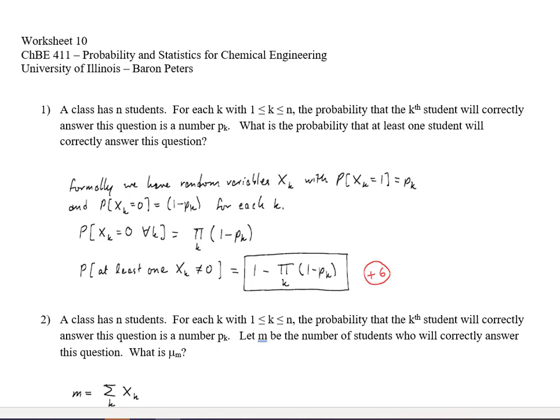Okay, so the first question asks: we have students numbered k = 1 through n with indexes k, and what is the probability that at least one of them will correctly answer a question?